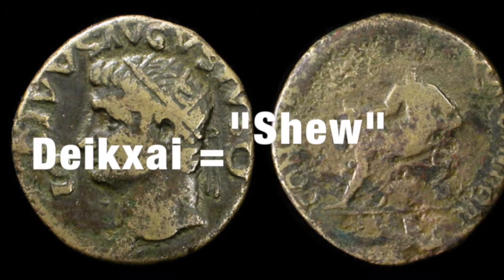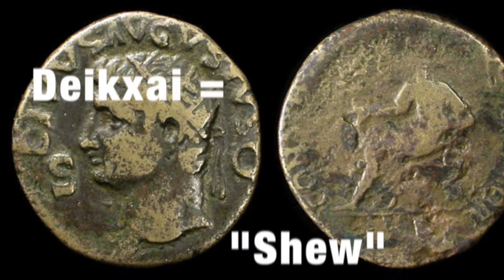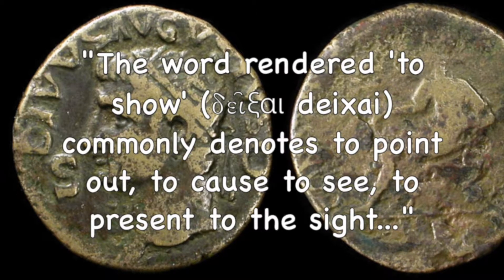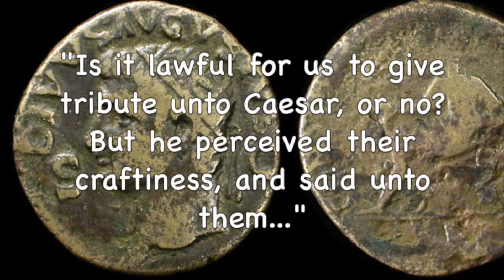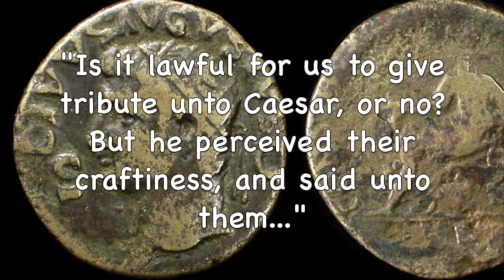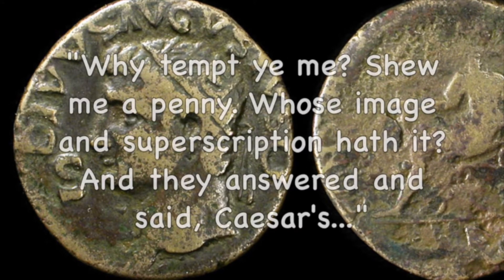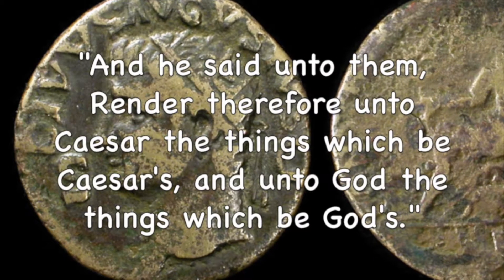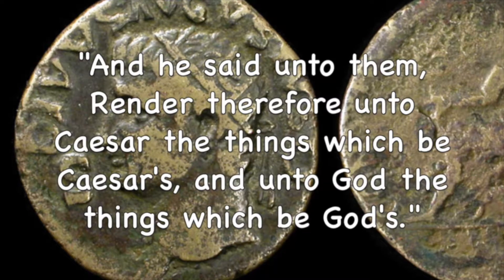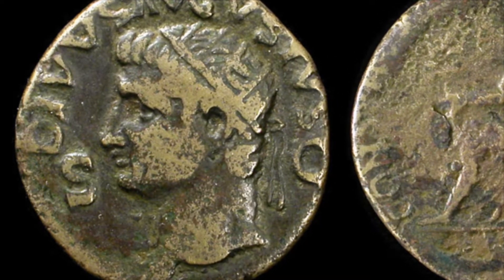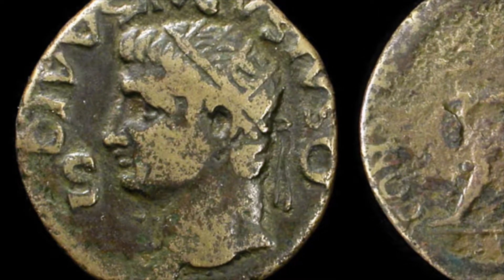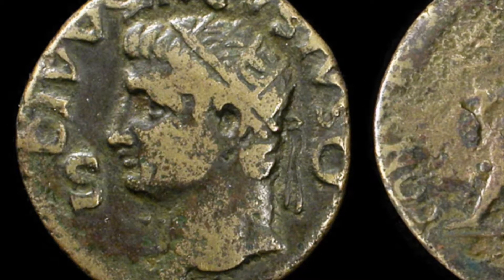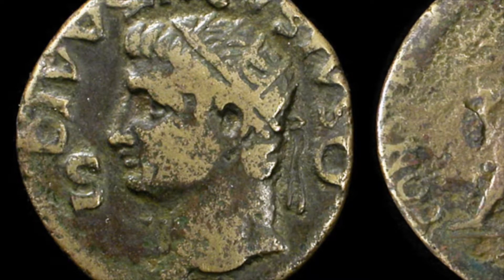The Greek word translated as 'shew' in the King James Version is 'dikhai.' Its primary meaning is to cause to see, expose to the eyes, or present visually. A good example of its usage is the exchange between Jesus Christ and the Pharisees on the matter of paying tribute to Caesar. Jesus asked the Pharisees to produce a coin with Caesar's image — the point was for them to look at it. The coin was shown, that is, caused to be seen by the Pharisees.